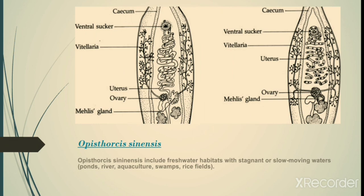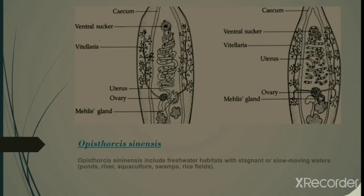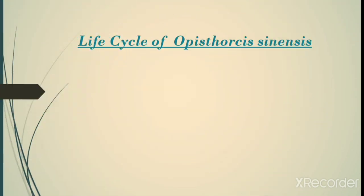Now we talk about Opisthorchis sinensis. As we can see here, there is a ventral sac, vitellaria, and uterus; it also contains the ovary and Mehlis gland. Opisthorchis sinensis inhabits freshwater habitats with stagnant or slow-moving waters — ponds, rivers, aquacultures, swamps, and rice fields.